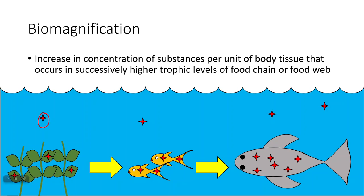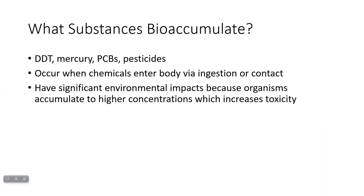This is a very big problem for top predators in an ecosystem, because not only do they have higher amounts of these chemicals in their bodies than in the environment, but the amount builds up higher and higher as you go up a food chain or food web. Substances that bioaccumulate include persistent organic pollutants like DDT and various pesticides, synthetic chemicals like PCBs, and heavy metals like mercury — which can both bioaccumulate and biomagnify.